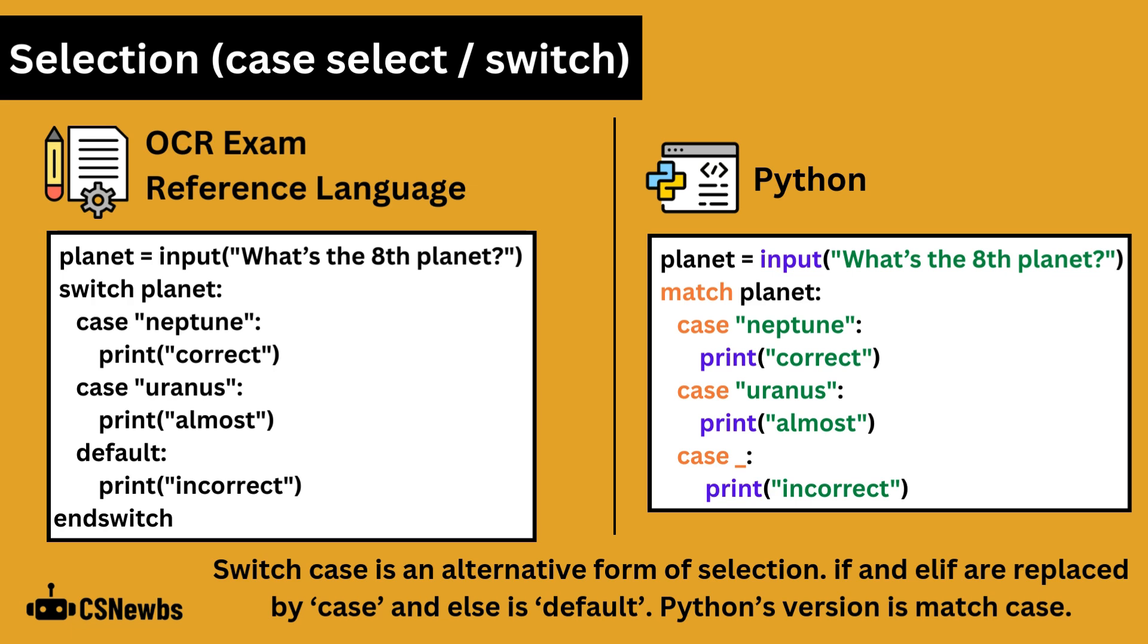Switch or match is the data to make a decision about. In this example, it is the value of the variable planet that has been input. Each case is compared to the switch in turn and it will run the indented code of the first that is true. If no cases are correct, default will run instead. This is the same as an else statement in if then else selection.